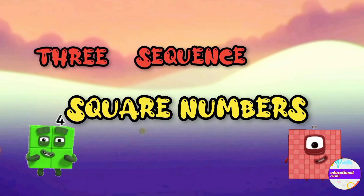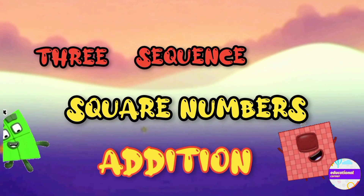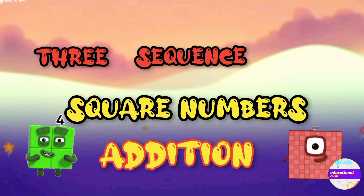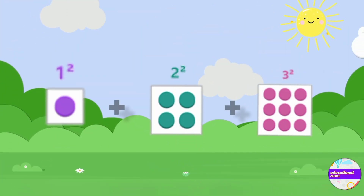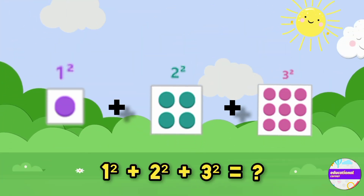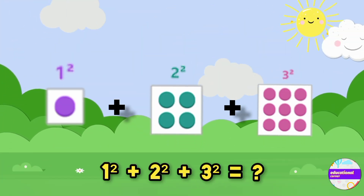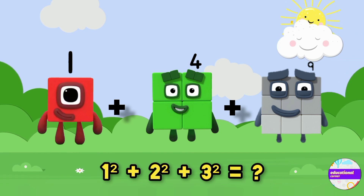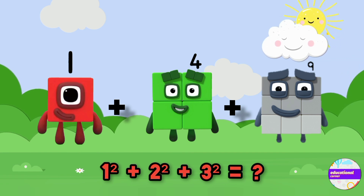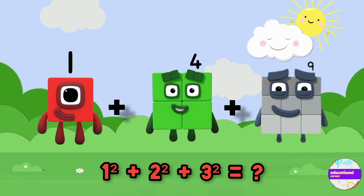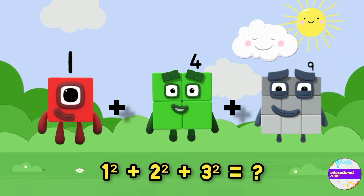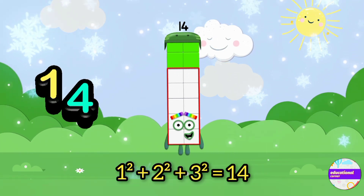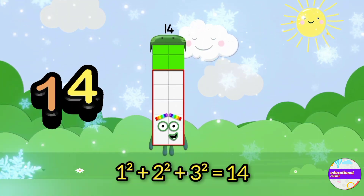Hello kids! Let's learn about adding three consecutive square numbers. We'll add the first three square numbers: one squared is one, two squared is four, three squared is nine. Now add them together — the answer is 14.